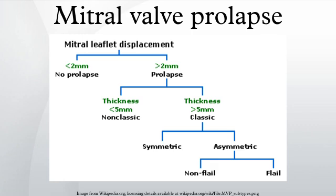In its non-classic form, MVP carries a low risk of complications and often can be kept minimal by dietary attention. In severe cases of classic MVP, complications include mitral regurgitation, infective endocarditis, congestive heart failure, and, in rare circumstances, cardiac arrest, usually resulting in sudden death.